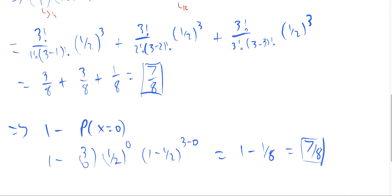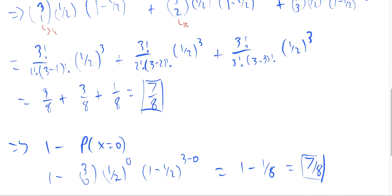The second method is a lot quicker because it cuts down on the amount of calculation needed, which also reduces the chance of algebraic error. The key insight is that if all possibilities must sum to one — P(0) + P(1) + P(2) + P(3) = 1 — you can just take one minus the portion you don't want. Since the problem asks for at least one tail, what we don't want is zero tails, so one minus P(zero tails) gives the same answer.